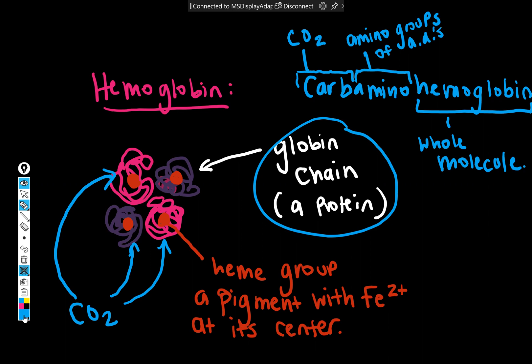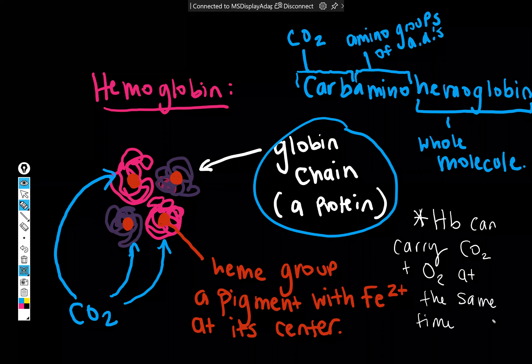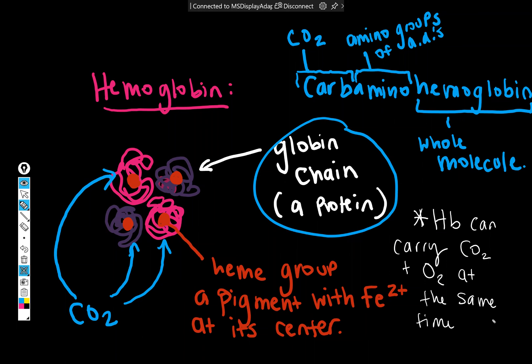So what this means is, and this is a piece that a lot of students end up missing for some reason, it means that hemoglobin can carry CO2 and O2 at the same time. Because CO2 and O2 adhere to the hemoglobin molecule on different parts. So it's totally possible and even common to have a hemoglobin molecule with four oxygens bound to it, so 4-O2, and then also be carrying some carbon dioxide.